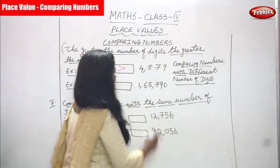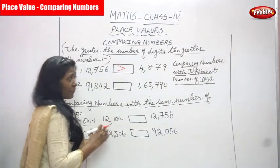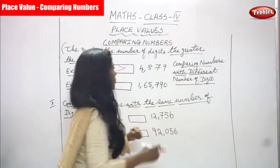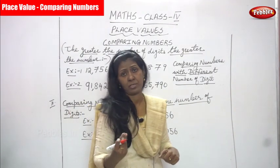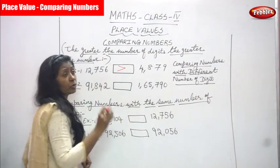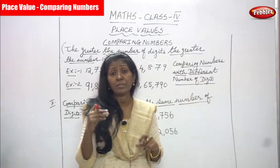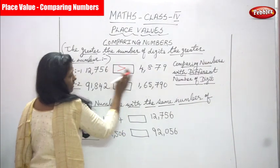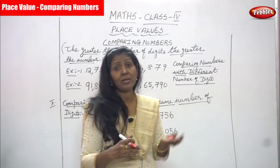That is what comparing numbers with a different number of digits means. Both are different numbers and also have a different number of digits, so we are comparing numbers with different digits. First you have to count the digits — how many digits in the particular number. Here one, two, three, four, five and here one, two, three, four — so five digits and four digits. That is very clear.